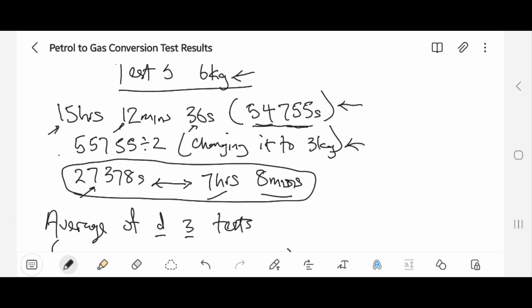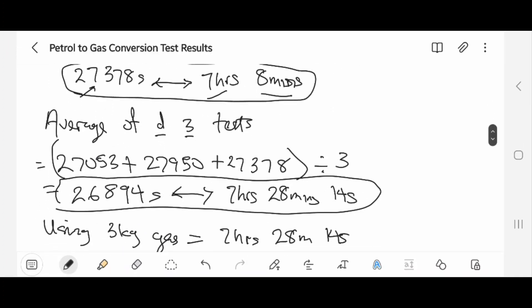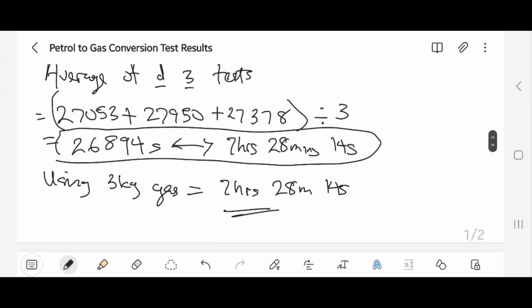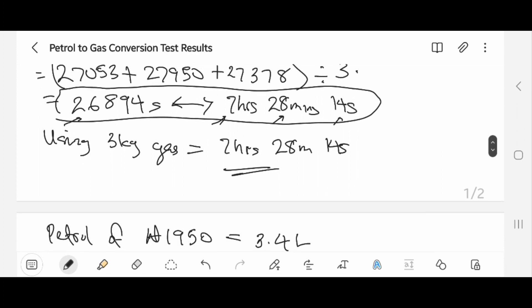I took the average of the three tests: 27,553 for Test 1, 27,950 for Test 2, and 27,377 for Test 3. I added the three together and divided by 3, which gave me 26,894 seconds. This translates to 7 hours 28 minutes and 14 seconds. On average, that means using 3kg of LPG will give you 7 hours 28 minutes 14 seconds under my condition, which is a 36.3% load on a 2.5kVA generator.